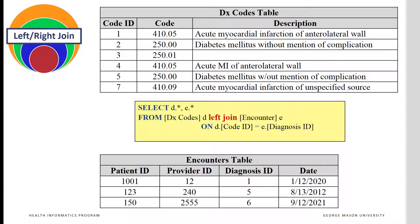In the left join, all records from diagnosis code table are included. Diagnoses that do not have an encounter are also included with the missing encounters having null value.